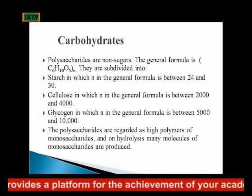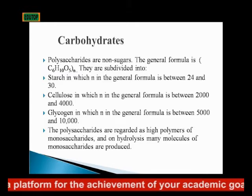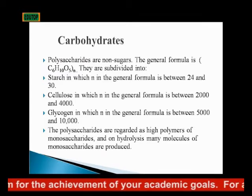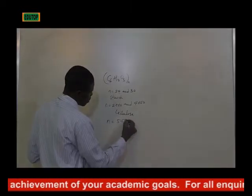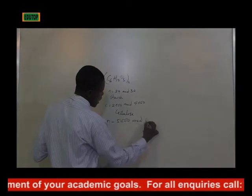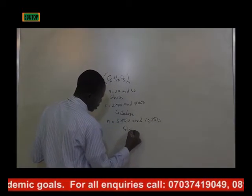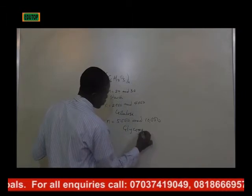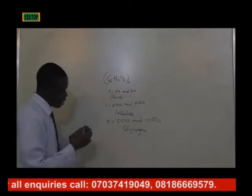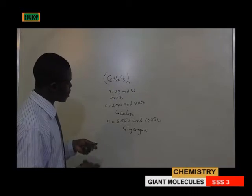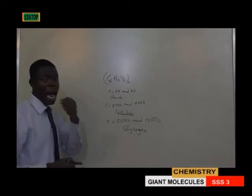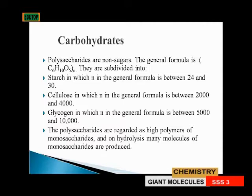For glycogen, n is between 5000 and 10,000. You can see that the value of n is very critical because it determines the particular carbohydrate you are talking about. Polysaccharides are regarded as high polymers of monosaccharides, and on hydrolysis, many molecules of monosaccharides are produced.